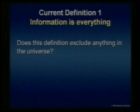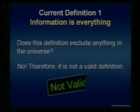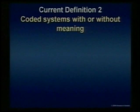So we're still building. Let me show you some of the current definitions of information. How about this one: information is everything. That's what I get from evolutionists. Does that definition exclude anything in the universe? No, it doesn't — it includes everything in the universe. That is not a valid definition. Here's the most popular definition used: information is coded systems with or without meaning. That is the most popular. Let's look at that one.